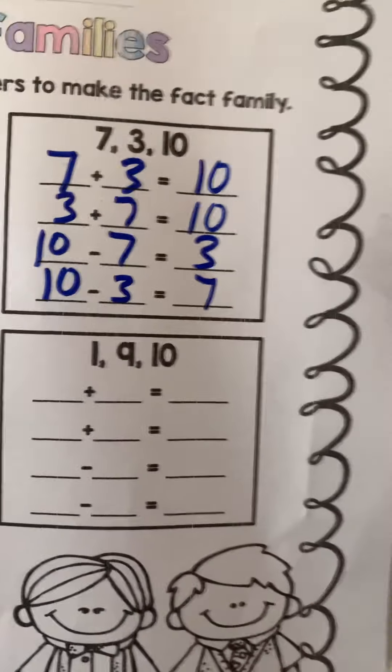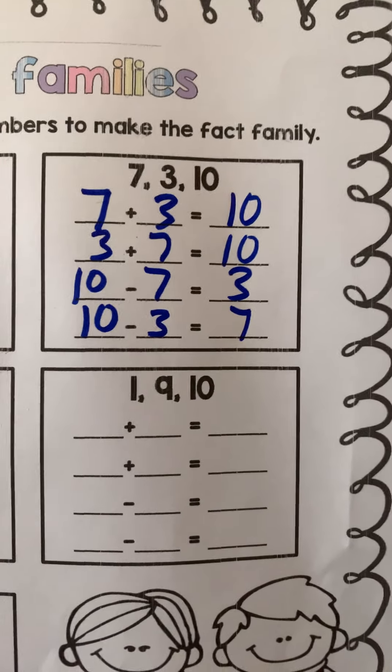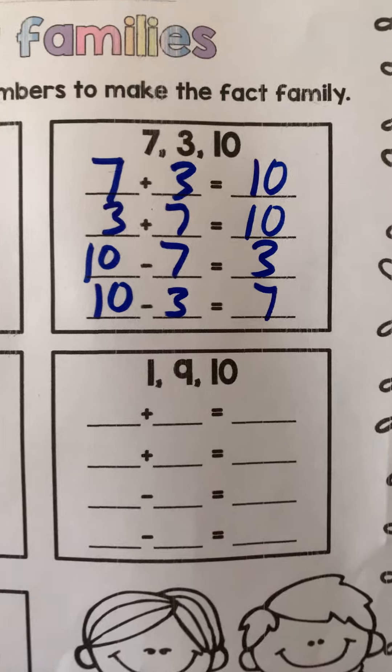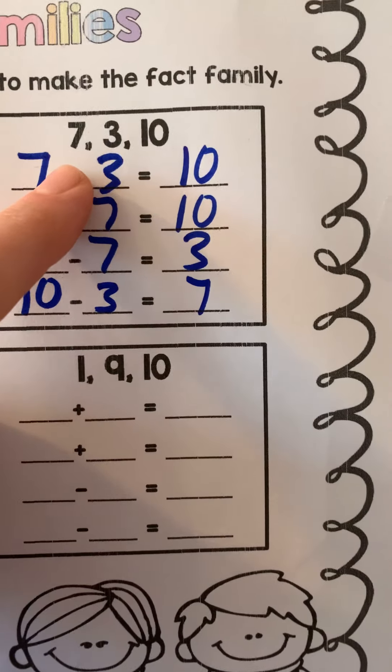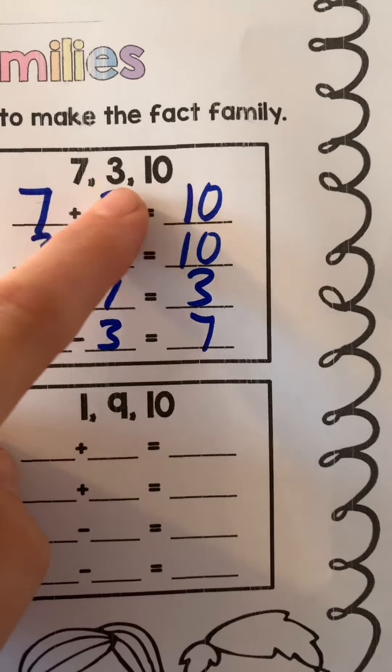Why could I not write 5 plus 5 is 10? Why couldn't I do that? Bear, what do you think? Because it wasn't part of the fact family, you're letting someone else in. If it says you can only use 7, 3, 10, those are the only numbers you can let in.